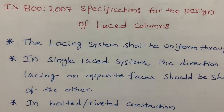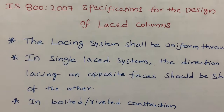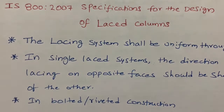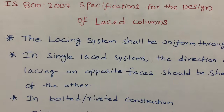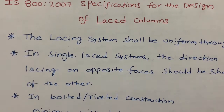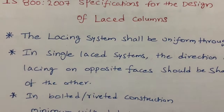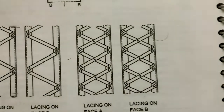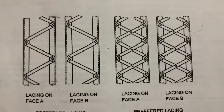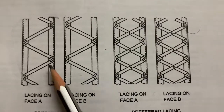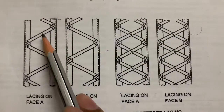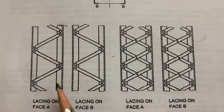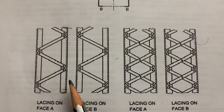In this video I will show you the design specifications of laced columns as specified by IS 800:2007 for design of steel structures. The first specification is that the lacing system shall be uniform throughout the column. This is the single lacing system and this one is the double lacing system — this lacing system should be uniform throughout the column.